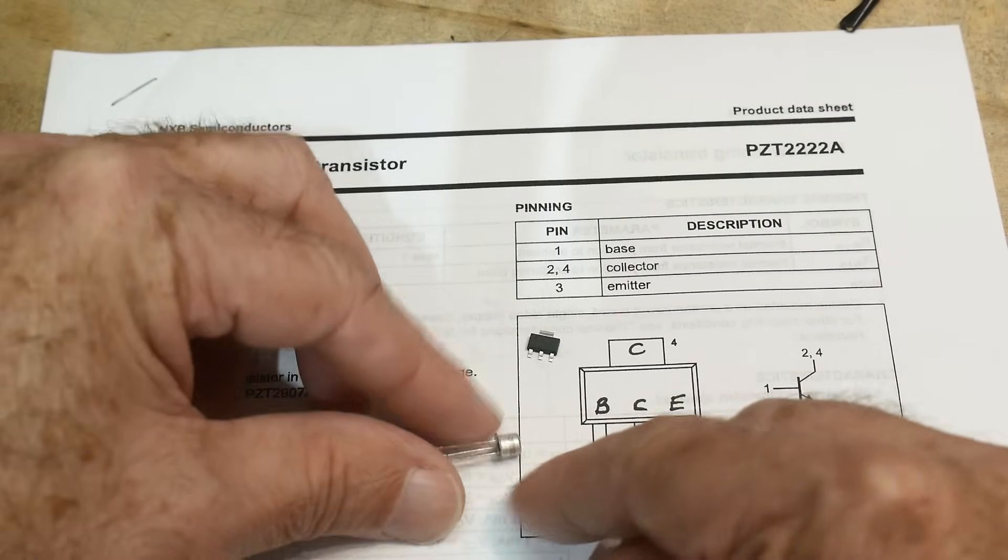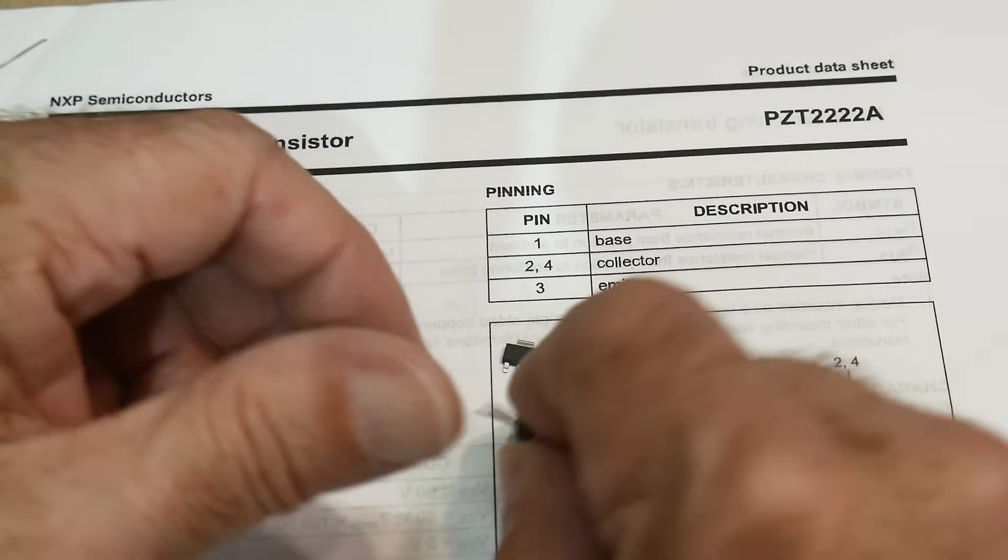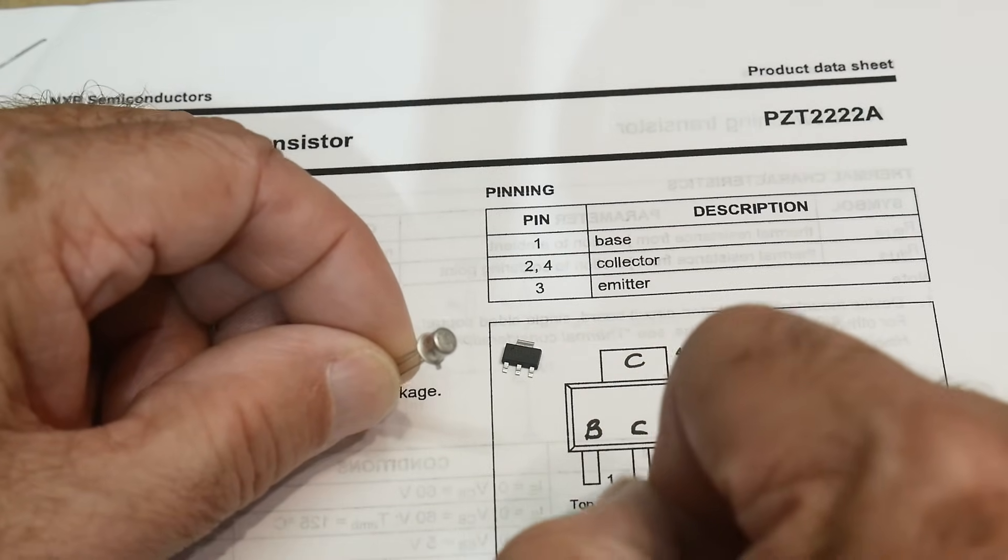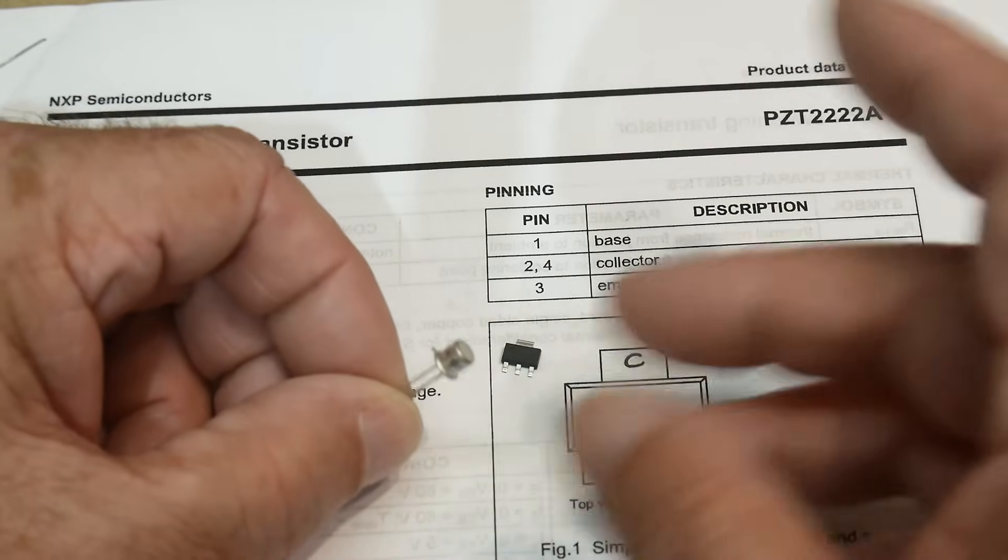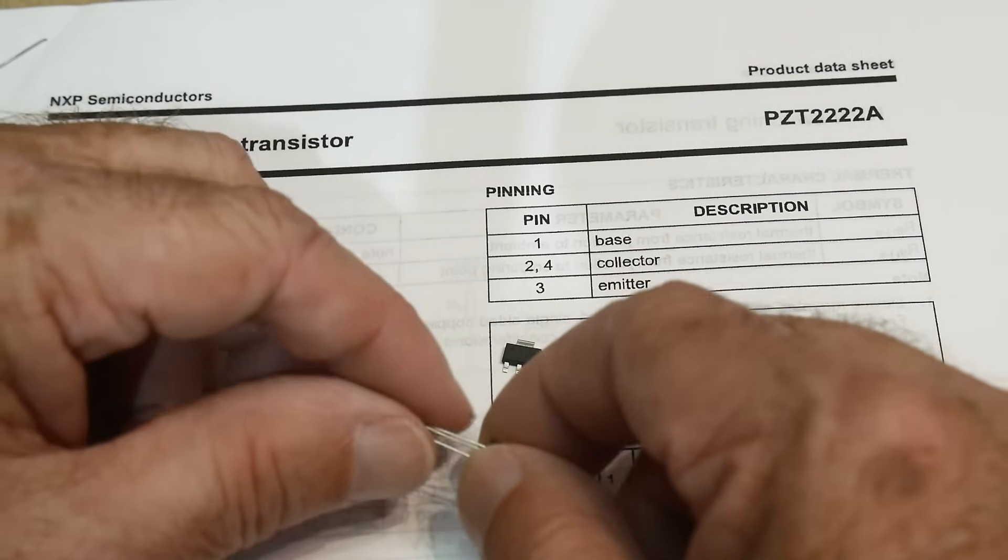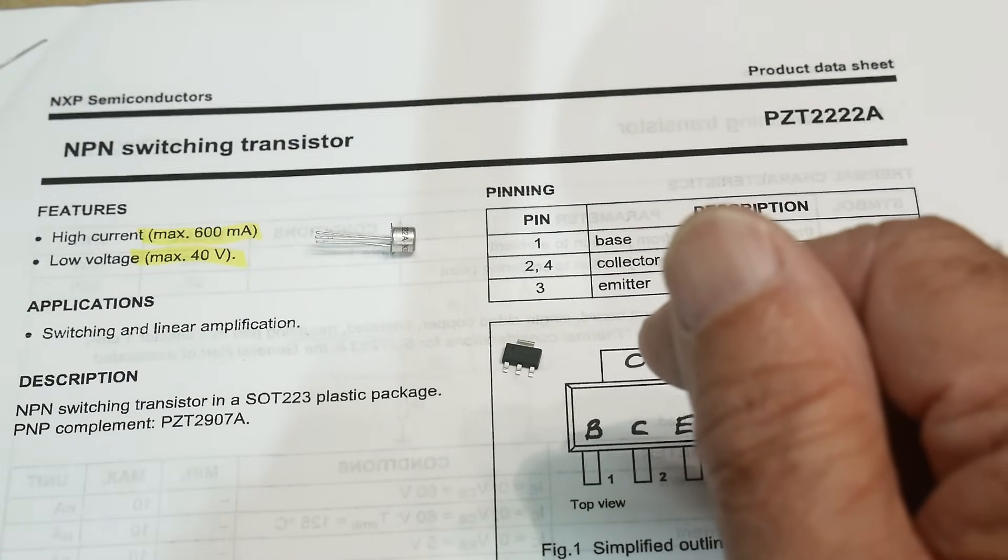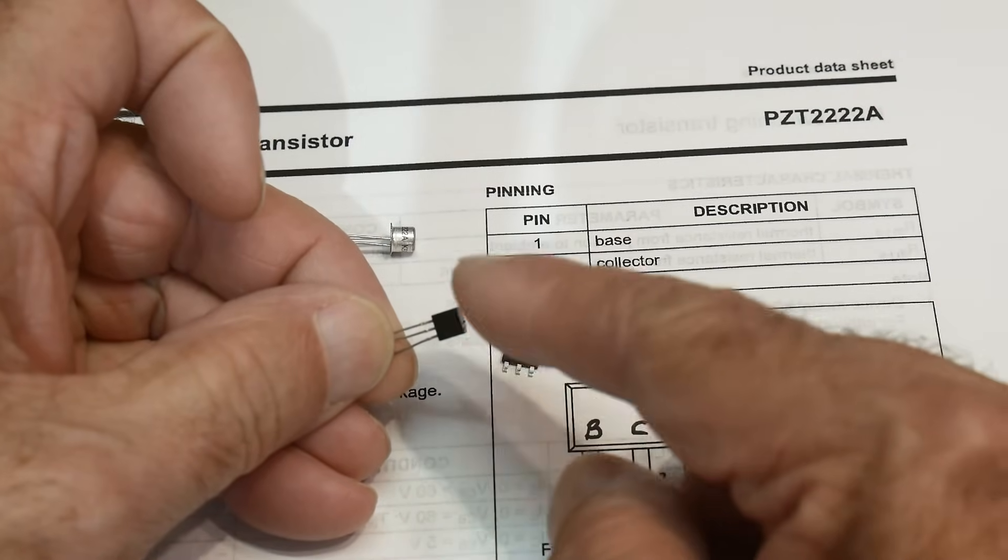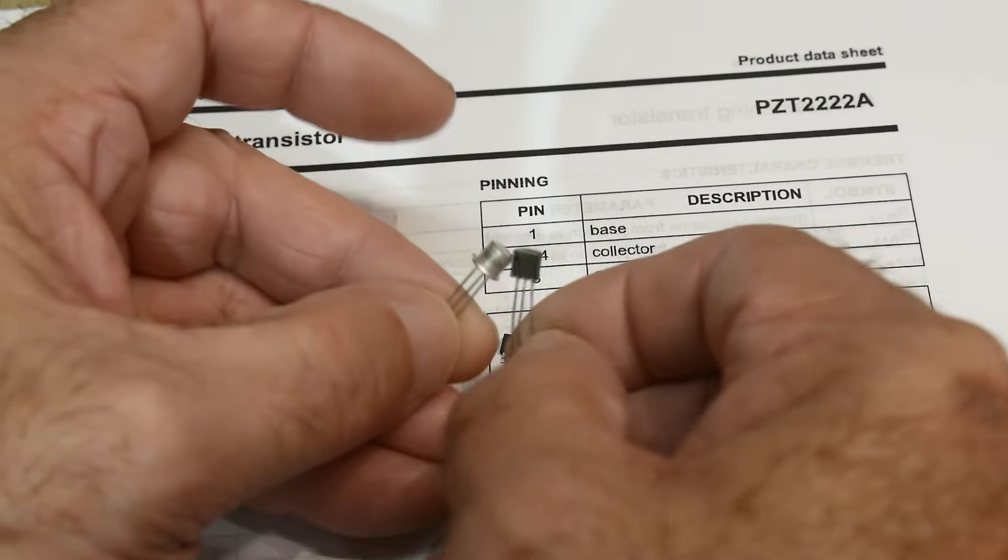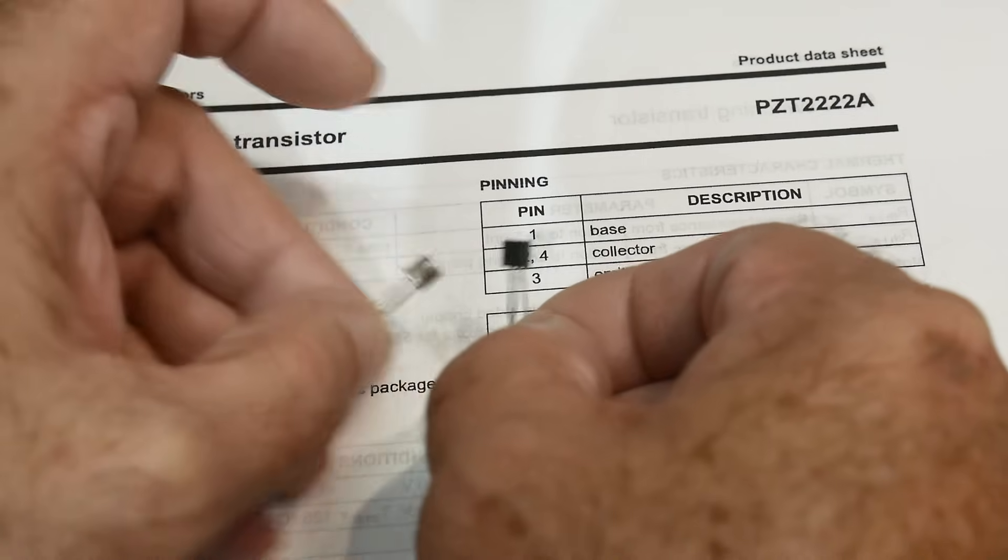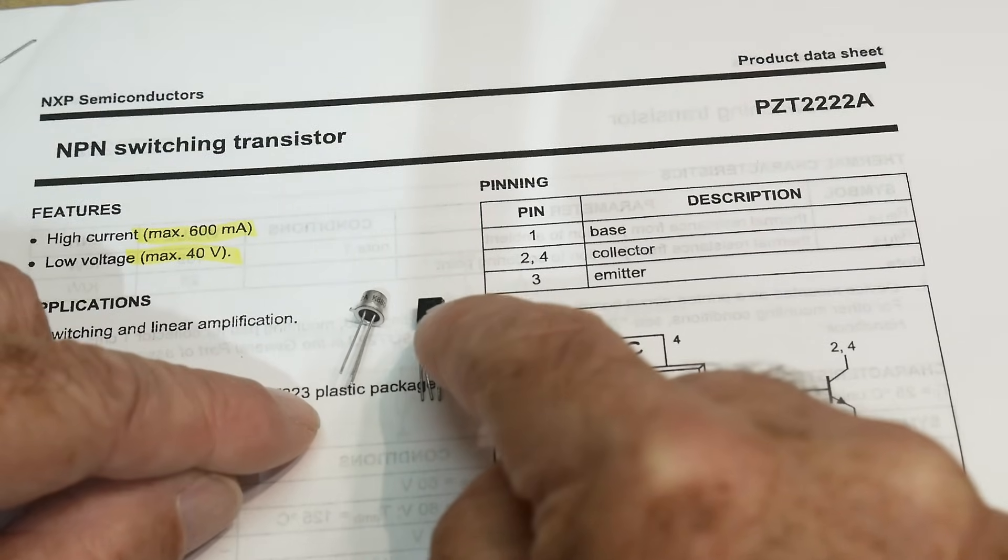It's a metal can. And can I zoom in a little bit? It's a metal can, three legs. This is what's called a TO18. And it's a metal can. And so it has a bit of heat sinking capability made out of metal. You can also get these transistors in what's called a TO92.